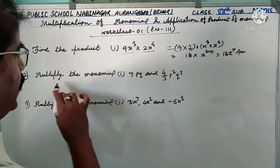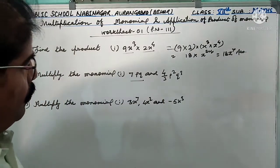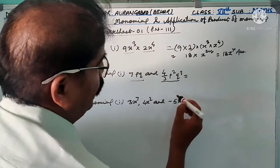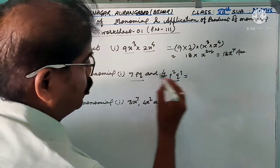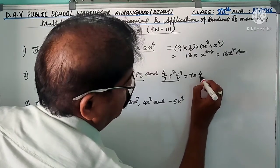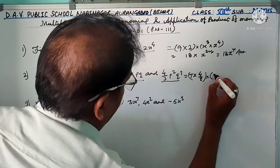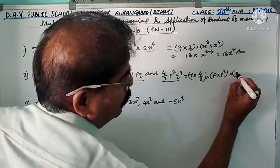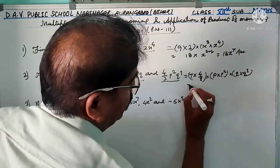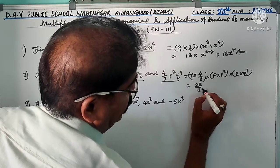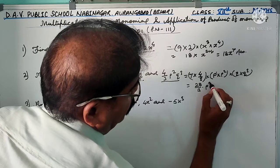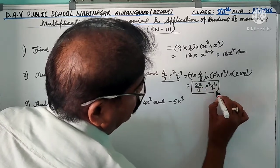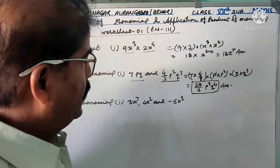Second question: multiply the monomials 7p³ and (4/3)p²q². Both are monomials. Solve in the same way as question one. First multiply the constant terms: 7 × (4/3) = 28/3. Then multiply the variables: p³ × p² = p⁵, and q² remains. So the answer is (28/3)p⁵q².